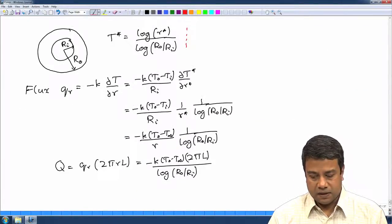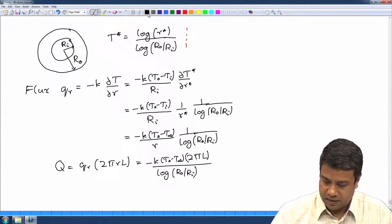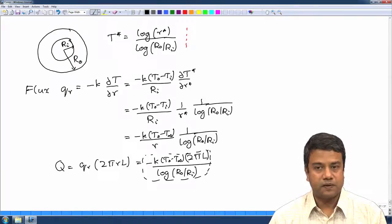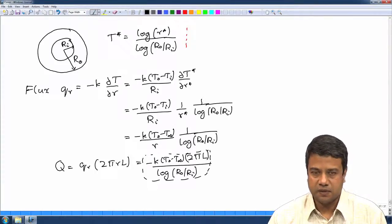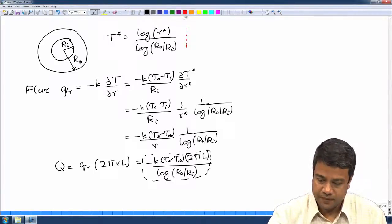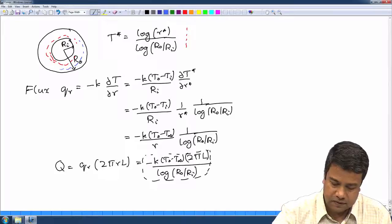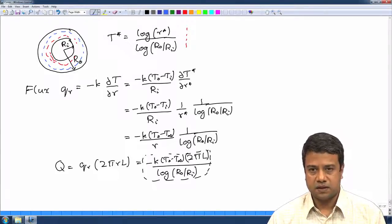From this we calculated the radial flux. The flux itself varies with radius, but the total heat transported across turns out to be independent of radius. That is expected because in the balance equation there are only heat conduction terms with no sources or sinks, so total heat transported must be independent of the location at which you look. The flux changes and the surface area changes in such a way that the total heat transported remains the same.